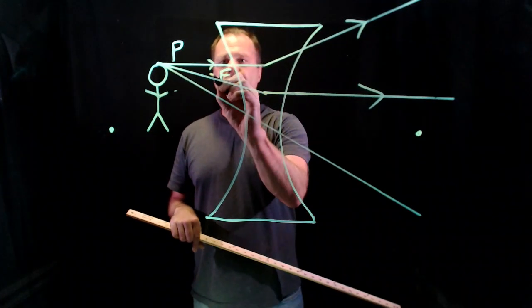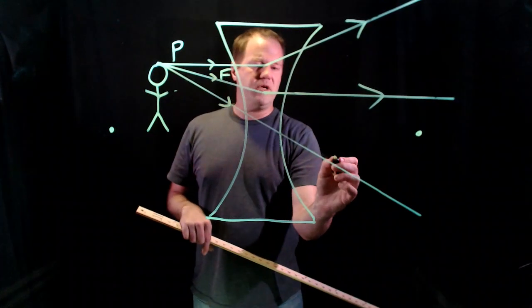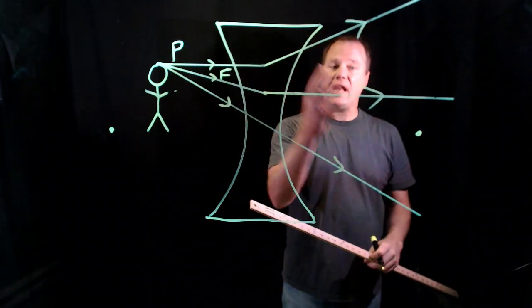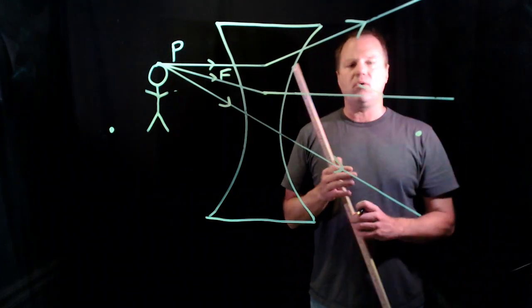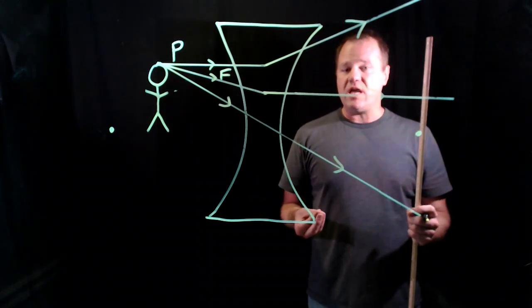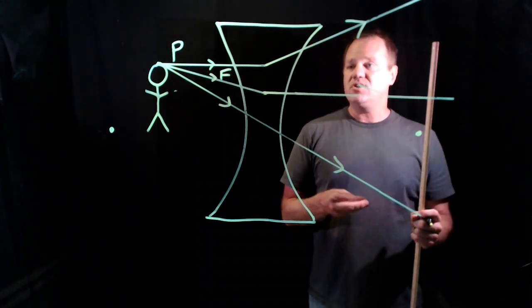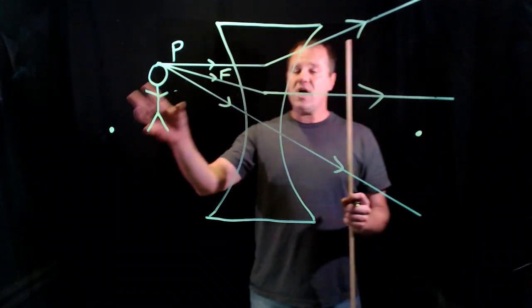So I have all of these rays going through this lens. And if I look on this other side, well, they don't seem to be converging. They don't. They don't converge to a point, so I don't have a real image. What I do have is a virtual image on the other side.